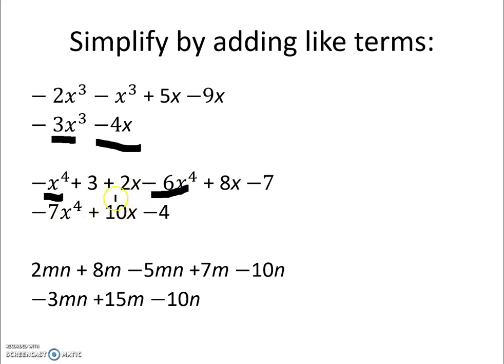Then we look for our x's and there's plus 2 here, plus 8 there, for a total of 10x. We have a positive 3 minus 7, which is a negative 4.